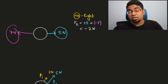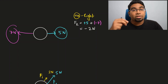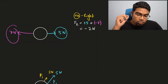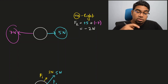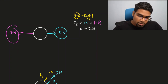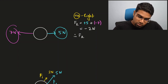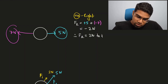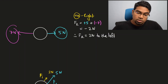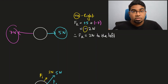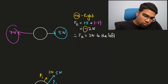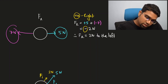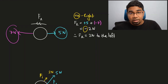Now this might seem a bit odd in the beginning — how can a force have a negative value? Remember that forces are vectors, and so the positive and negative in front of the magnitude of the force simply indicates its direction. Since we already assigned right to be positive, the answer is negative. Therefore the resultant force is equal to 2 newtons to the left. Negative simply indicates that the resultant force acting on this object is in the left direction, which means this object is going to accelerate towards the left.